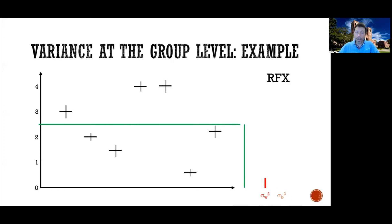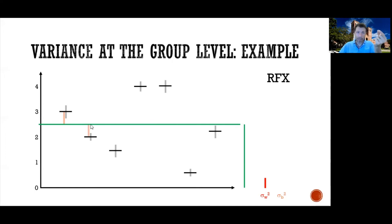Sigma squared between is about how variable the effect is between different participants. The overall mean was 2.5, but one participant had three, one had two, one had one and a half, a couple had four, etc. The between-subjects variability is how variable my participants are around the overall mean. To calculate it, you take each participant, measure how far they are from the mean, square that, then add up all participants' squared deviations.